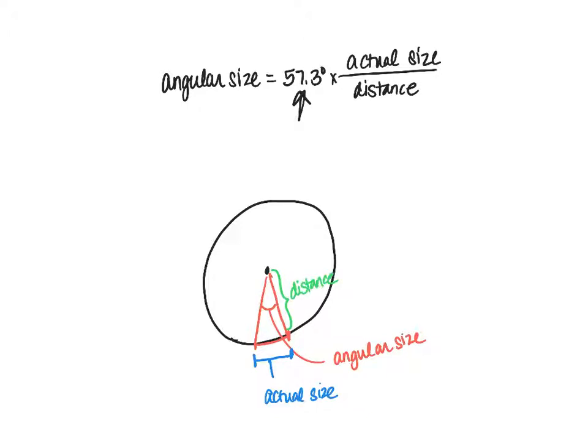The angular size and the actual size and the distance and the 57.3 come from comparing this little piece of the pie that we've outlined in red and all these different shapes. Then if we think about going the whole way around the circle, we're comparing the angle to the distance around.